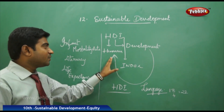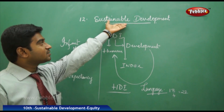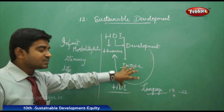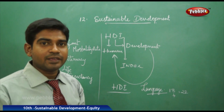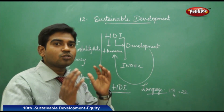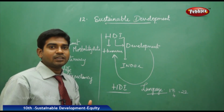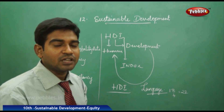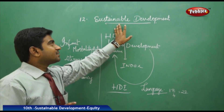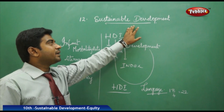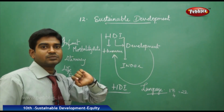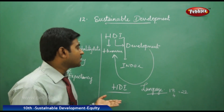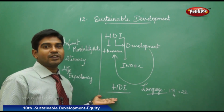Now, what is the link between Human Development Index and sustainable development? When all human beings are developing properly, it leads to the overall growth of society, the overall growth of the nation, and the overall growth of the region. That means it is sustainable development in regard to human beings. We shall discuss what the other important factors are for sustainable development.